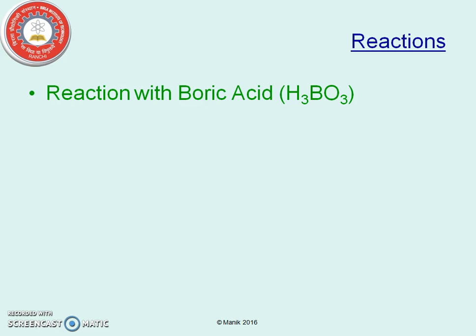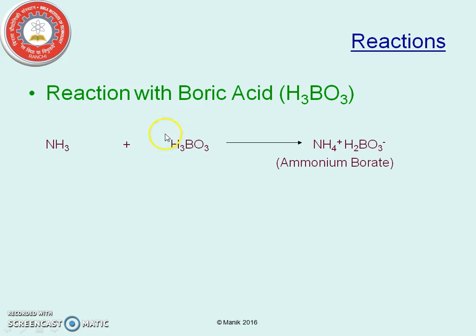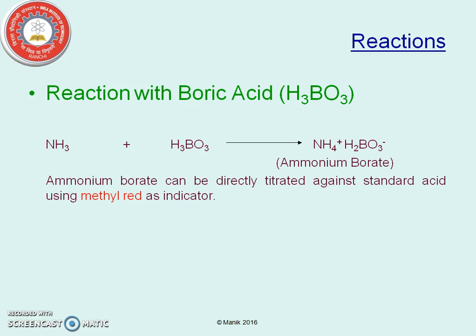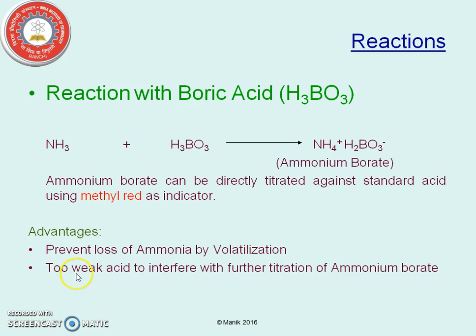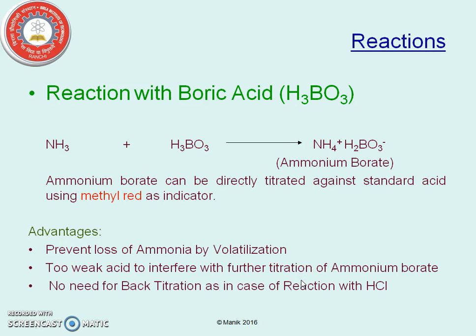Now coming to the other reaction — reaction with boric acid. Here, ammonia gas which is evolved from the first reaction is being trapped in boric acid, and it is going to form ammonium borate. The ammonium borate can be directly titrated with the standard acid using methyl red as indicator. This particular reaction has some advantages over the previous reaction. Number one, it prevents loss of ammonia by volatilization. Second, boric acid is too weak an acid to interfere with further titration of ammonium borate. And third, there is no need for back titration as in the case of the reaction with HCl.